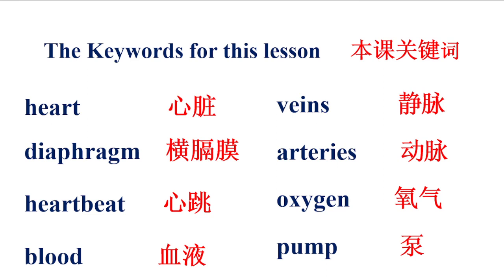The key words for this lesson are: heart, 心脏, heart; diaphragm, diaphragm; heartbeat, 心跳, heartbeat; blood, 血液, blood; veins, 静脉, veins; arteries, 动脉, arteries; oxygen, 氧气, oxygen; pump, 泵, pump.